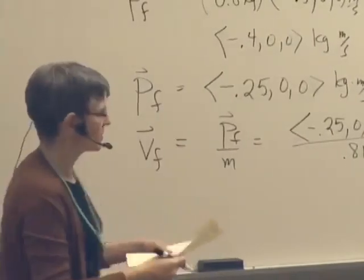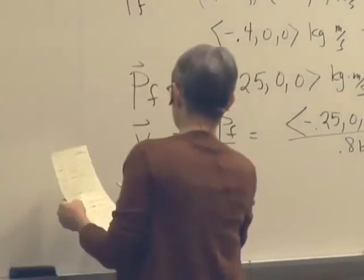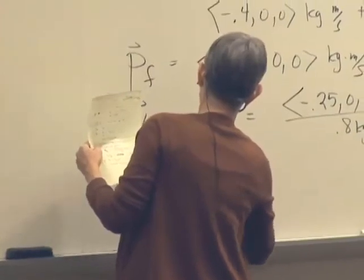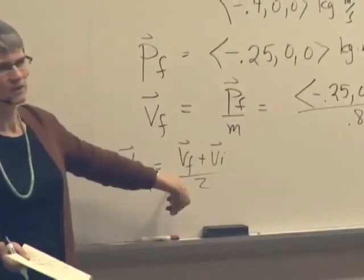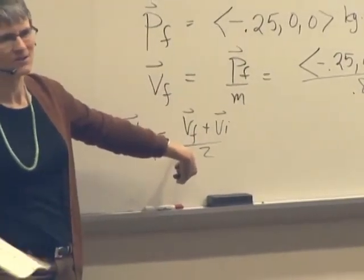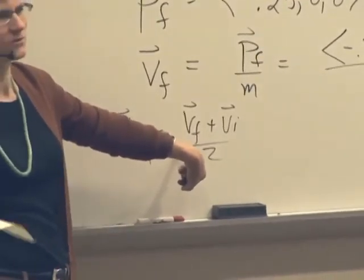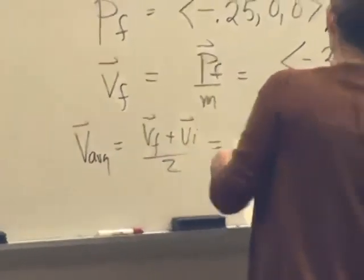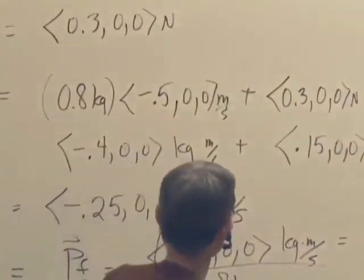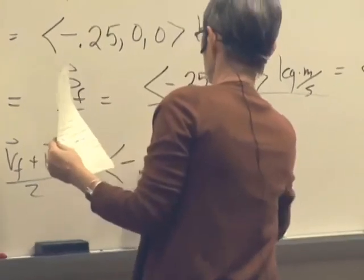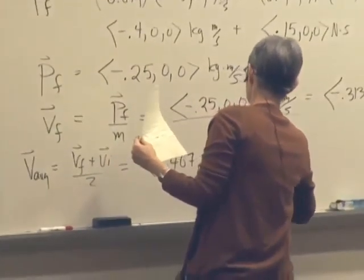Oh, we can use V average. Since we know it's a constant force, we can actually calculate a V average. So V average is V final plus V initial over 2. Don't get confused by, this is an average. Remember, you add up the numbers and divide by the number of things you added together. Okay, this is not delta V. This is the average that you learn to do in fourth grade, okay, except that it's vectors. And so we're going to take this number and that number and average them. And we get something like negative 0.4070 meters per second.